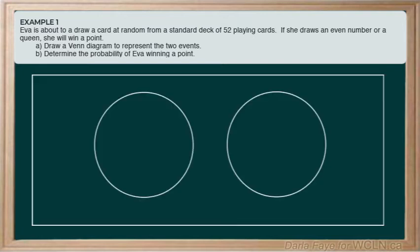I'm going to draw two separate circles and label each. I'm going to label the left-hand circle with an E and it's going to represent the favorable outcomes for the first event, which is selecting an even number. Next, I'm going to label the right circle with a Q to represent the favorable outcomes for the second event, selecting a queen.